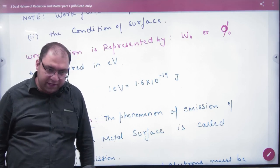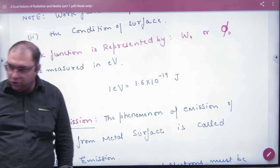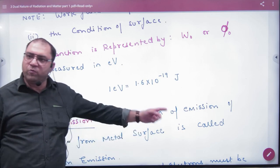We represent it as W-not or Phi-not. What are the units of work function? Electron-volt. We have to convert into joules.